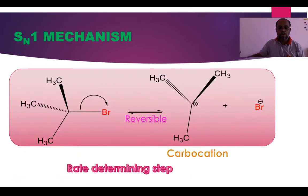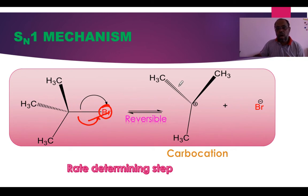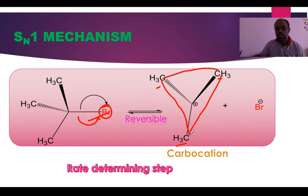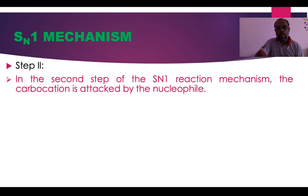In the pictorial representation, bromine takes the electron pair from the alkyl halide and forms a tertiary carbocation. This tertiary carbocation is planar — it is in a trigonal planar shape. This step is very slow and reversible.